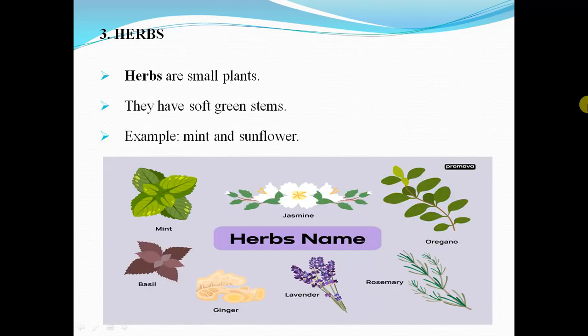Herbs. Herbs are small plants. They have a soft green stem. Examples include mint, sunflower, basil, ginger, lavender, rosemary, oregano, and jasmine. So they are very small plants.